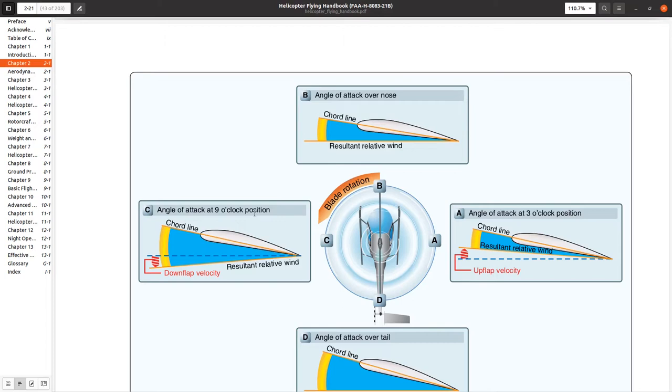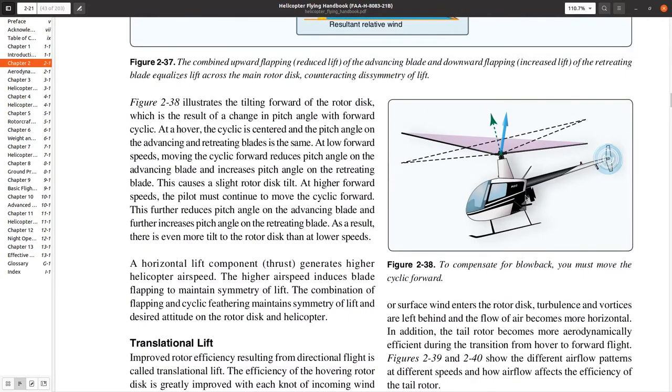If we have a semi-rigid rotor system, which you might find, say, on a Robinson, then it's just going to teeter on a teetering hinge. Whereas if you have a fully articulated system, such as what you would find on an Enstrom or a Schweitzer, then it's going to flap on the flapping hinge instead. So that is being in forward flight.